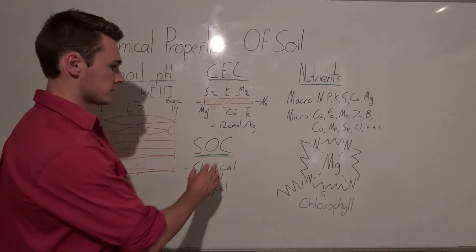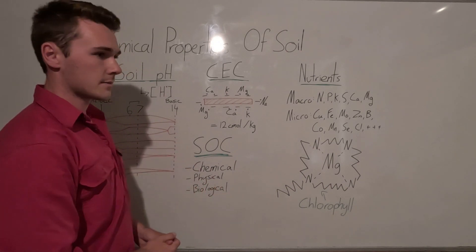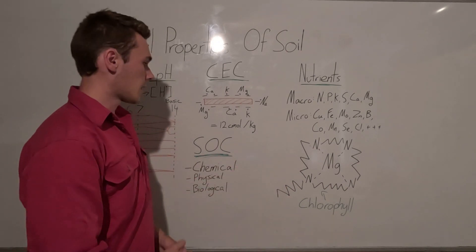So really small scale and there's a lot of them. And so instead of saying there's trillions and trillions and trillions of things in our soil, we say there's a couple of mole. Anyways, it's like a dozen.